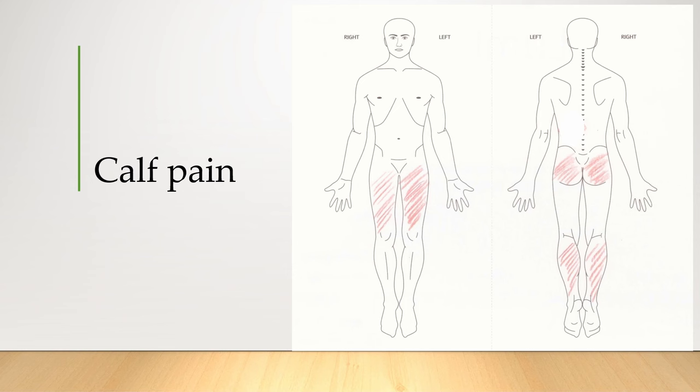While many pain specialists might initially assume that simultaneous gluteal and calf pain points to central stenosis or radicular pain, delving deeper into this patient's history reveals a more nuanced situation. The calf pain she experiences is diffuse, not localized, suggesting it may not be radicular in nature. She reports no claudication, but has discomfort that predominantly appears at night. She revealed marks on her skin indicating lower extremity venous insufficiency, suggesting that the calf pain might be separate from spinal issues and more suggestive of venous congestion.